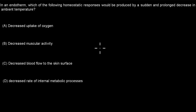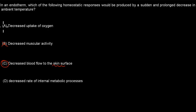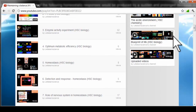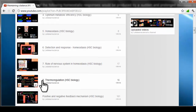The correct answer was C — decreased blood flow to the skin surface. The reason why is because if you have less blood at the skin surface, there's less heat loss in your blood as well. B is incorrect — it actually increases activity. A is completely incorrect. And D is incorrect because it increases, not decreases, metabolic activity. This question is covered in video number 8: Thermoregulation.